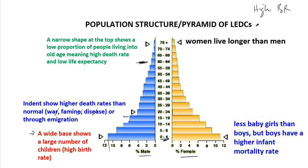Moving up further, people do not live to a very old age in LEDCs — the top extends to about 75 and above. However, there are more females than males at the top, so women live longer than men. A narrow shape at the top shows a low proportion of people living into old age, meaning high death rate and low life expectancy.